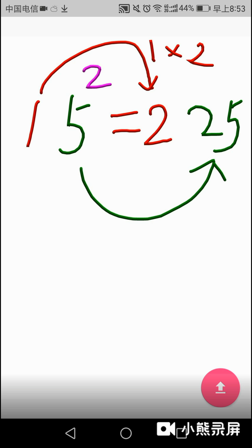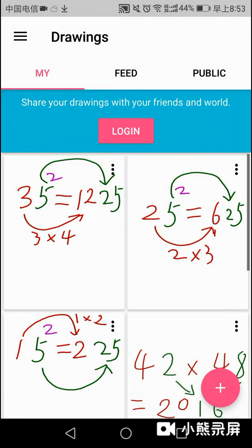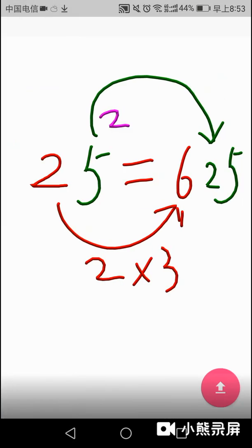Let us see another example. Now, we see the square of 25 is 625. First, the right part of the result is equal to 25.